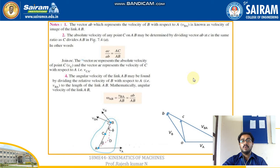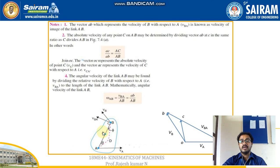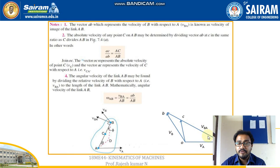Key points to remember: the vector AB represents the velocity of B with respect to A, or VBA, and is known as the velocity image of link AB. The absolute velocity of any point C on AB may be determined by dividing the vector ab at c in the same ratio as C divides AB — that is, ac/ab = AC/AB. Join OC: the vector OC represents the absolute velocity of point C, and vector ac represents the velocity of C with respect to A, that is VCA.